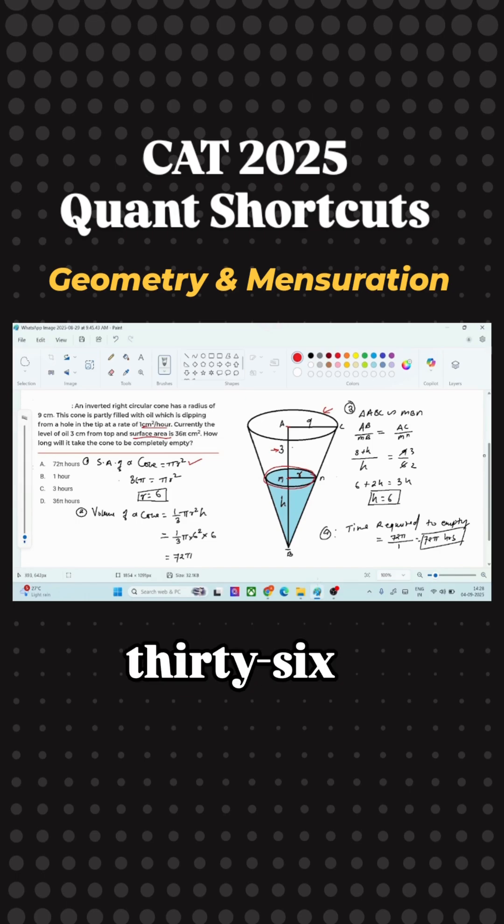Now, this is given as 36π. And using 36π is equal to πr², I can get the value of r which is 6. Let's read the question further.